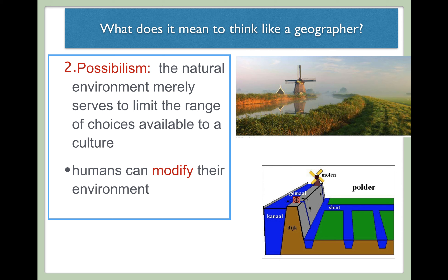Possibilism believes that the natural environment merely serves to limit the range of choices available to a culture — it's not determining anything or bounding you to be a particular way; it's simply placing limitations on what a group of people can do in a given place. For example, if you tried to plant a lemon tree in Washington, D.C., citrus fruit is very difficult to grow here — it isn't the right soil or climate for citrus to truly grow.